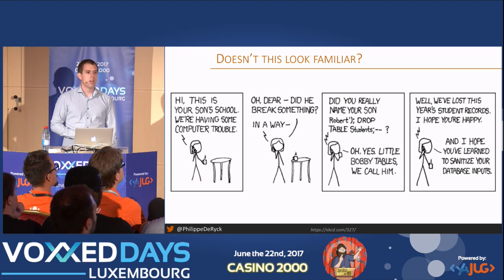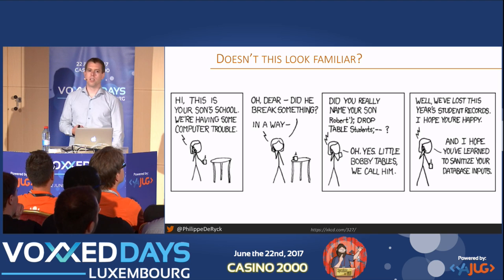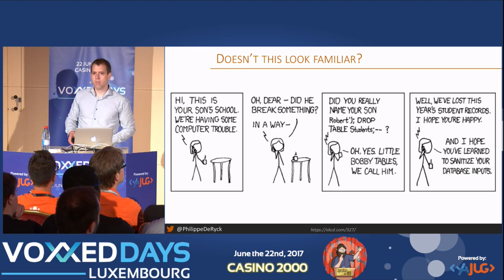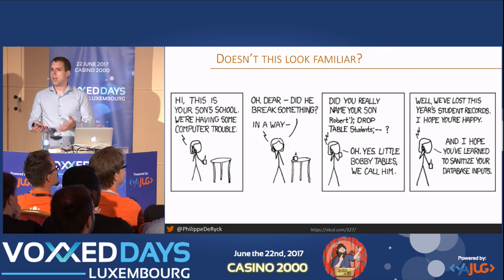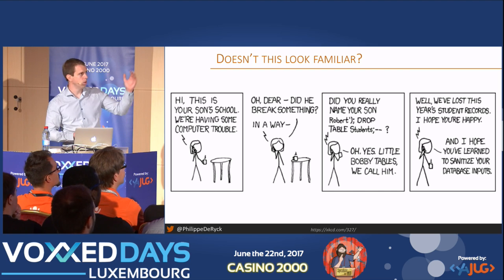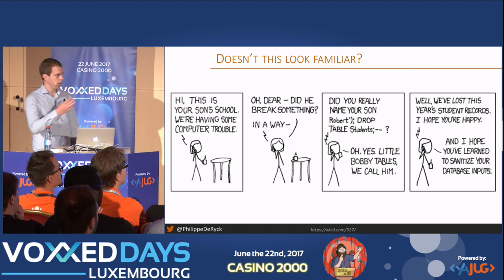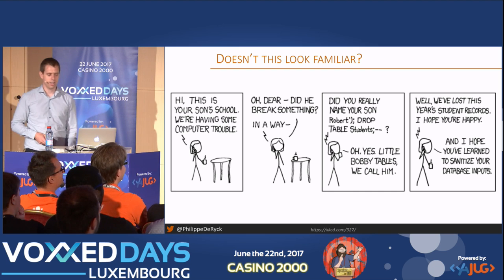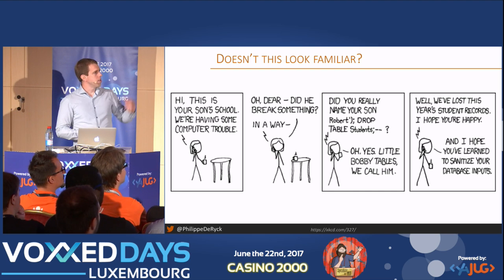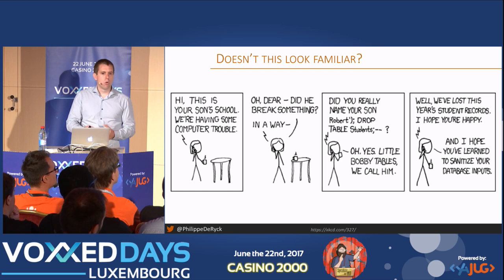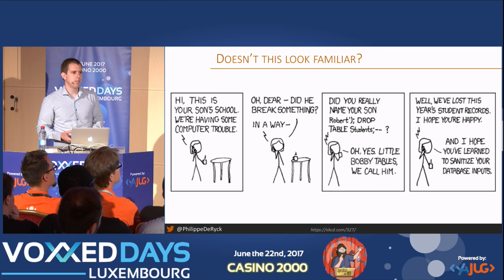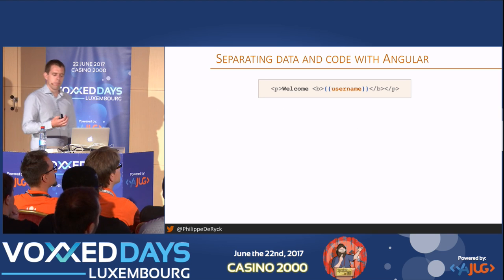This problem exists in other places as well. Think about SQL injection — the server generates a SQL query and the database is confused about what parts are data versus code. You probably know the Bobby Tables comic that illustrates this well. The point is that encoding output is only treating the symptoms. What would be better is avoiding the confusion between data and code altogether — and that's essentially what Angular does.